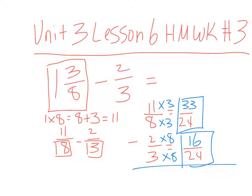33 minus 16 is 17. The denominator stays the same, and my answer in simplest form is 17 over 24. Thank you.